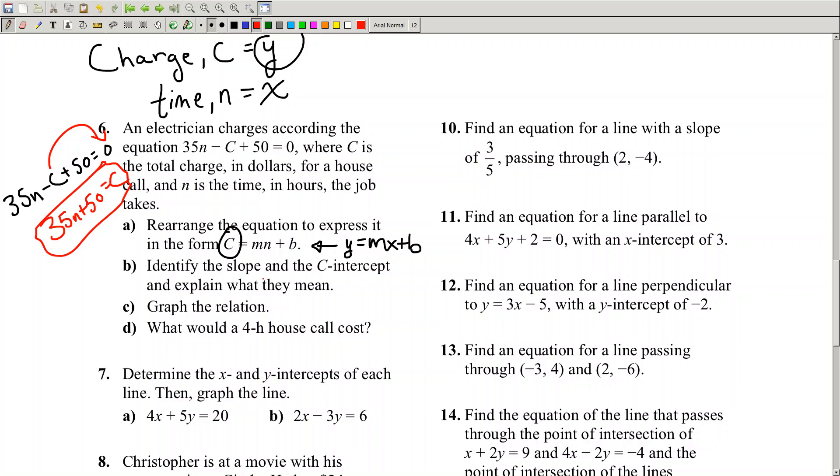Now, what do we need to do? We need to identify the slope and the y-intercept. Don't get confused. C is the y. C is y. And explain what they mean. Well, let's first identify what the slope is and what the y-intercept is. This is x. n is x. So the number beside n is your slope. The number beside n is 35. So the slope is 35. And the y-intercept is 50.